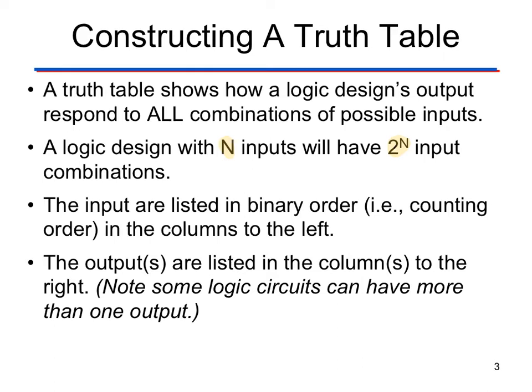The inputs are all going to be listed in binary order — we'll show what that means in a second. That actually makes it a lot easier to create the truth table. The outputs are listed in the columns to the right, so we have all our inputs to the left. Right now you're going to be looking at scenarios that only have one output, but several outputs are a possibility and we look at those later.